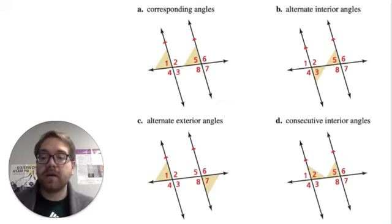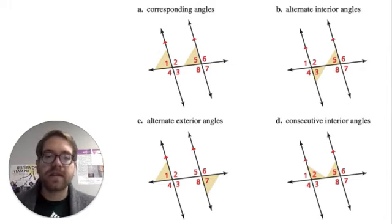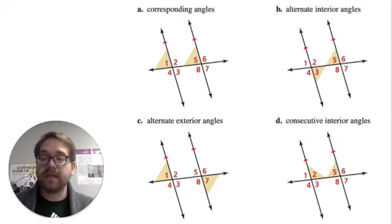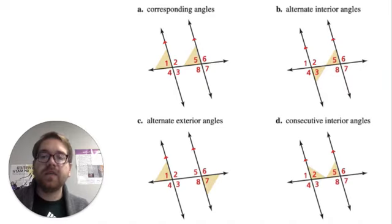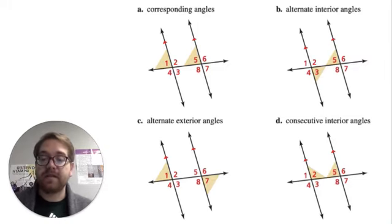Before winter break, we were talking about these four different types of angle relationships: corresponding angles, alternate interior angles, alternate exterior angles, and consecutive interior angles. You want to make sure you remember those different angle types and how to identify them when two lines are cut by a transversal. And you want to make sure you especially remember what we know about those angles and their relationship to each other when we have two parallel lines cut by a transversal.